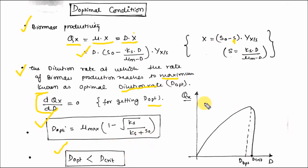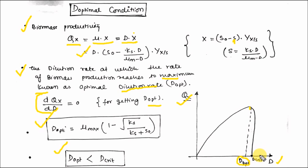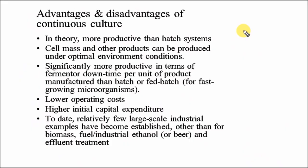D_optimal must always be less than D_critical. Plotting biomass productivity Q_X versus dilution rate D produces a curve with a maximum at D_optimal; productivity tends to zero at D_critical. This confirms from the graph that D_optimal is less than D_critical.